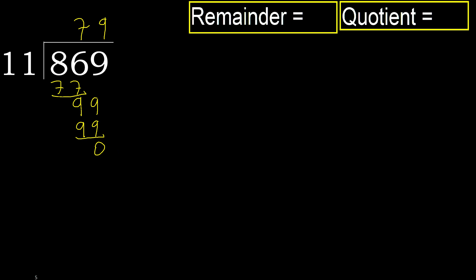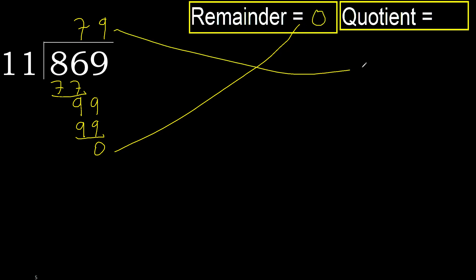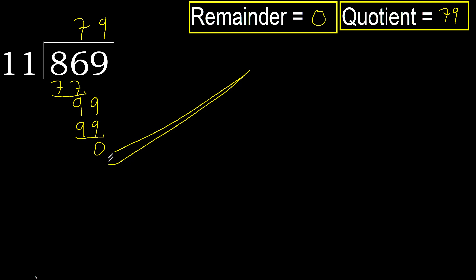There is no next number, therefore finish it. The remainder is 0, therefore 869 divided by 11 is 79. All right, thank you.